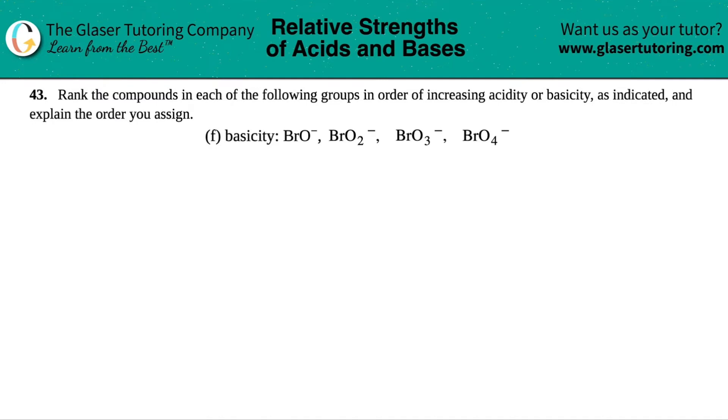Number 43, rank the compounds in each of the following groups in order of increasing acidity or basicity as indicated, and explain the order you assign. And then we have letter F out of the bunch. So in this case, we have to rank according to increasing basicity, and then they give us four anions here, BrO⁻, BrO₂⁻, BrO₃⁻, and BrO₄⁻.